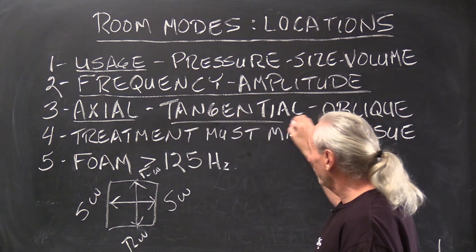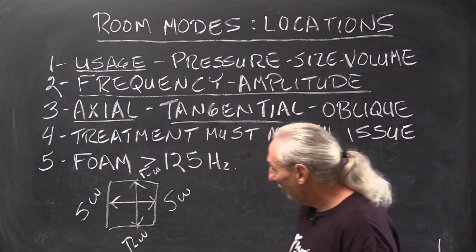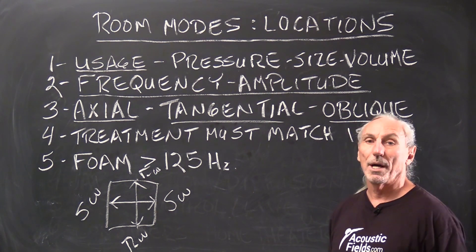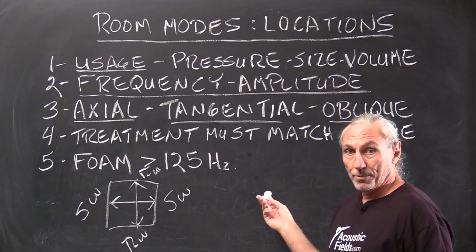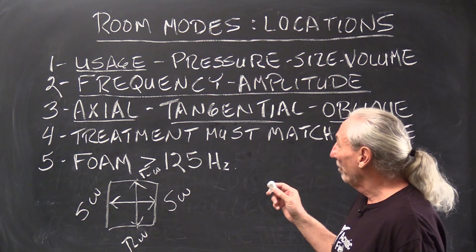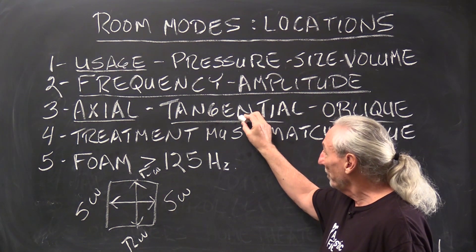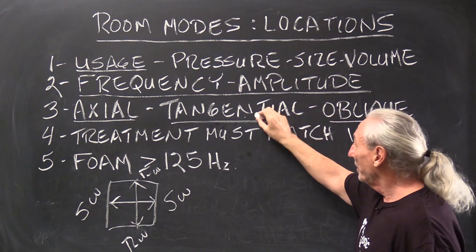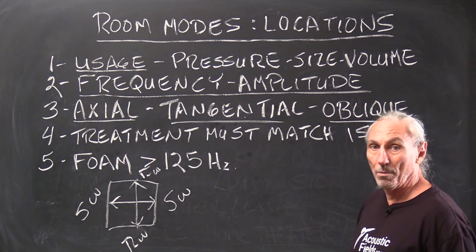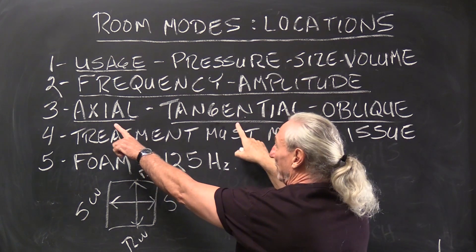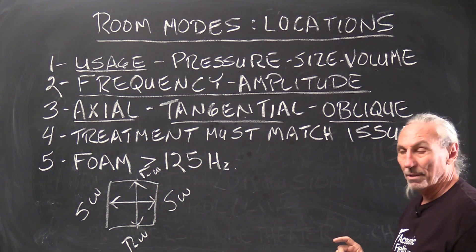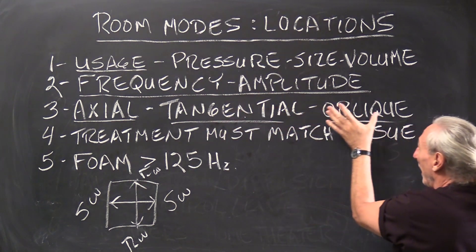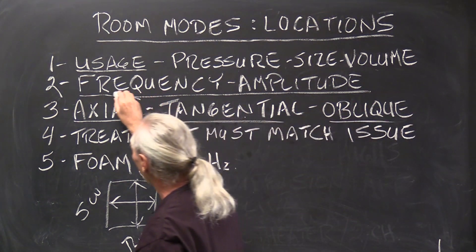So tangential is the next one which is four walls. I don't quite know how to draw that, but you know what I mean. And then oblique is six planes, floor, ceiling and the four side walls. They're the least troublesome, the least powerful. And what we're going to talk about in future videos is that if we treat the axial modes, they have a direct impact on tangential and the tangential have a way bigger impact on oblique. So really when we're focusing our treatments, we look at these two. This one, not so much. Because if we treat these two, if we treat this one well, this one falls in place and this one falls in place. So we got to go after this big elephant here.